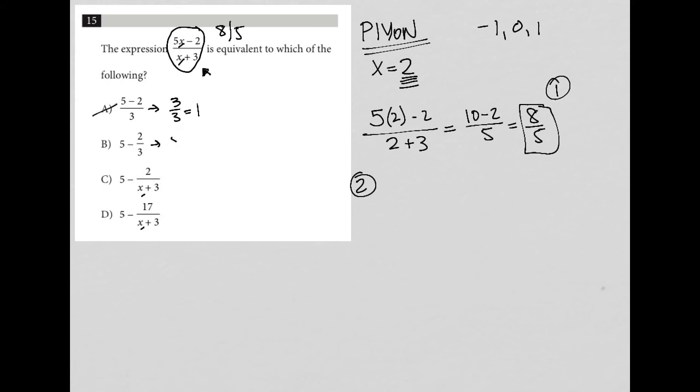Choice B: I can write this as 5/1 minus 2/3, which with a common denominator of 3 becomes 15/3 minus 2/3, which equals 13/3. This is also not 8/5, so B is out.